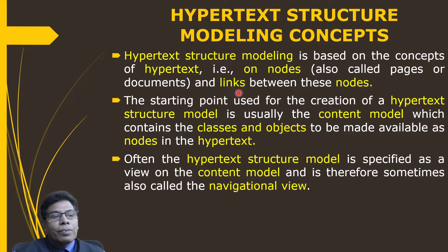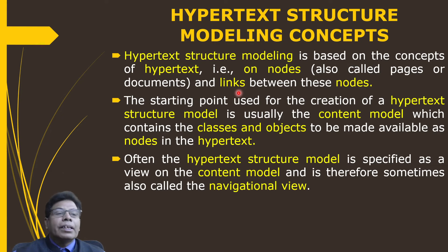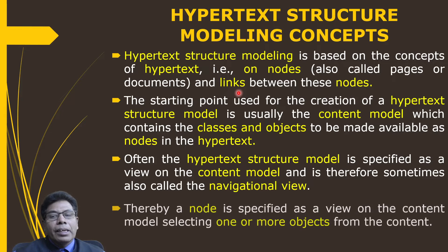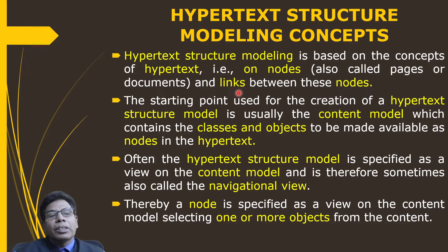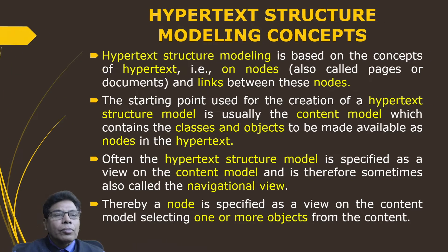Often the hypertext structure model is specified as a view on the content model, and is therefore sometimes called the navigational view. A node is specified as a view on the content model, selecting one or more objects from the content — that is the point from where navigation can occur.